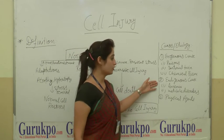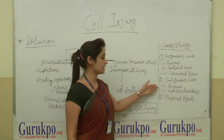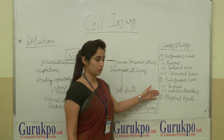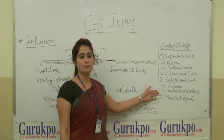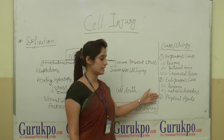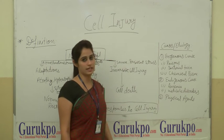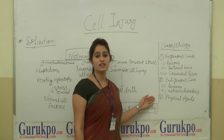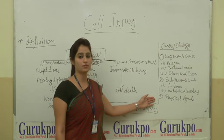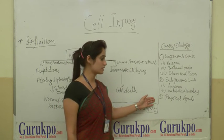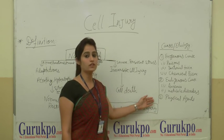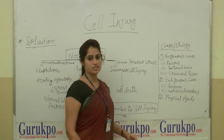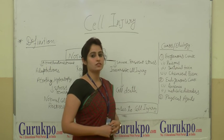Second, Endogenous Cause — Anemia, Metabolic Disorder such as Diabetes Mellitus, and Labour Failure. Third, Physical Agents — like excessive heat and cold produced from the cells, mechanical trauma, thermal trauma, electricity, and radiation.